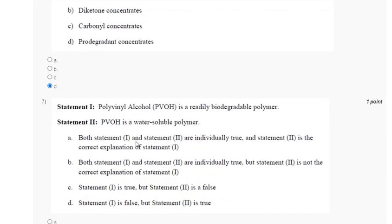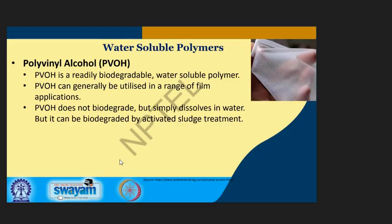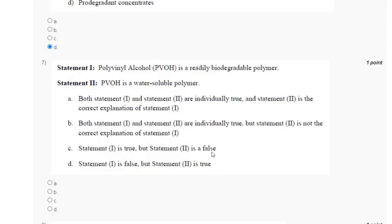Question 7: Statement 1 — polyvinyl alcohol is a readily biodegradable polymer. Statement 2 — polyvinyl alcohol is a water-soluble polymer. Explanation: polyvinyl alcohol is both a readily biodegradable and water-soluble polymer. The correct answer to question 7 is option A — both statements are correct.